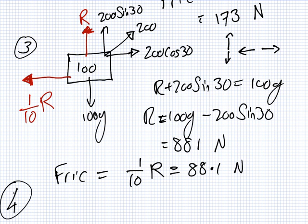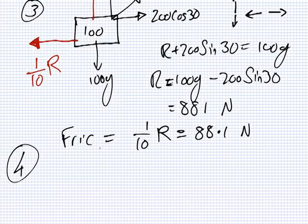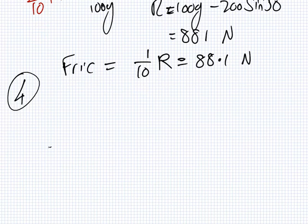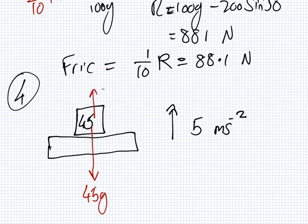Four. A 45 kilogram woman is sitting on a helicopter that is about to take off. The helicopter takes off with acceleration of 5 meters per second squared. What is the reaction force between her and her seat? So, here there's a weight of 45 g and a reaction force here of R.